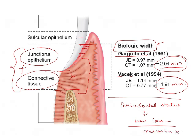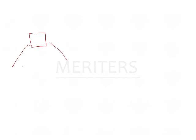This leads to failure of restoration, prosthetic failure, and periodontal failure. Now, consider that this is a tooth in the socket — this is your alveolar bone and this is your gingiva. If you want to place the margin supragingivally, no problem, go ahead as it is.